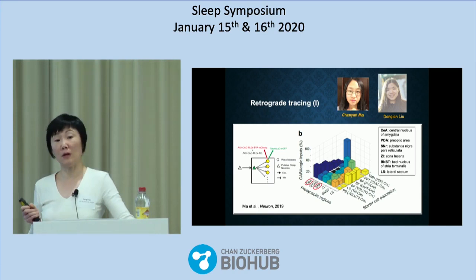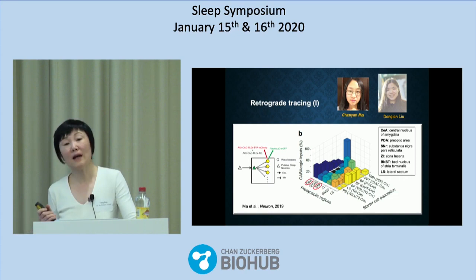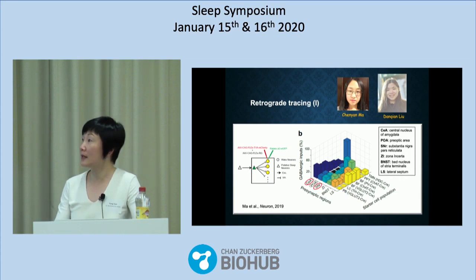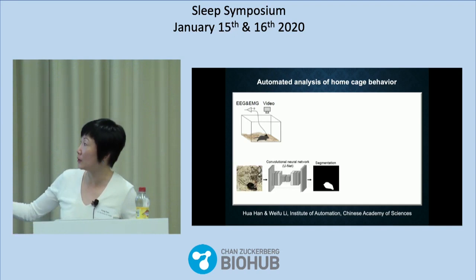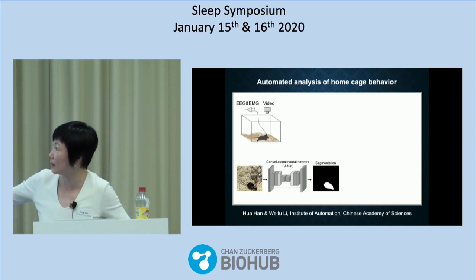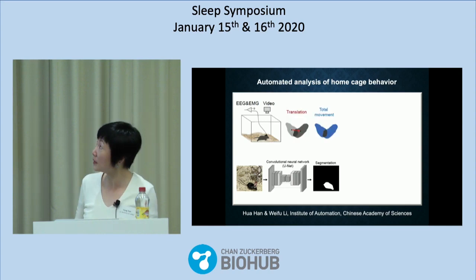Some of you may know that the SNR is actually part of the basal ganglia controlling movement. To understand how these apparent motor neurons can be involved in sleep, we decided to take a closer look at motor behavior. In addition to EEG and EMG, we also added video recording. Our collaborators in Beijing used deep learning to train a network for image segmentation, which identifies where the mouse is in the frame and allows us to extract simple parameters about movement: translation — the movement of the center of mass — and total movement.